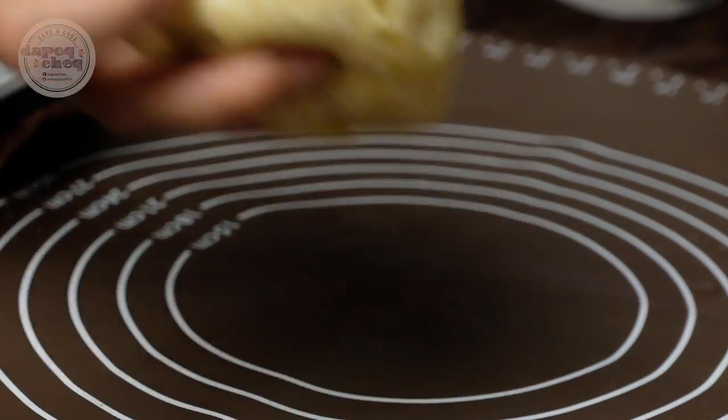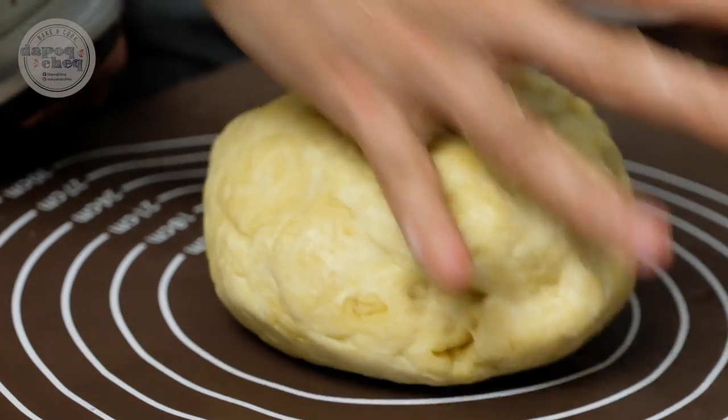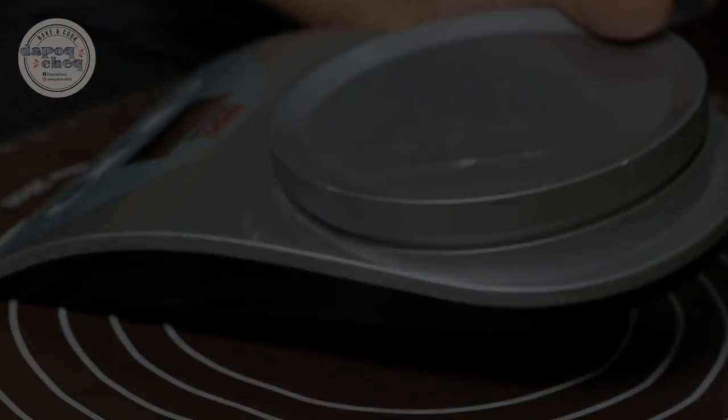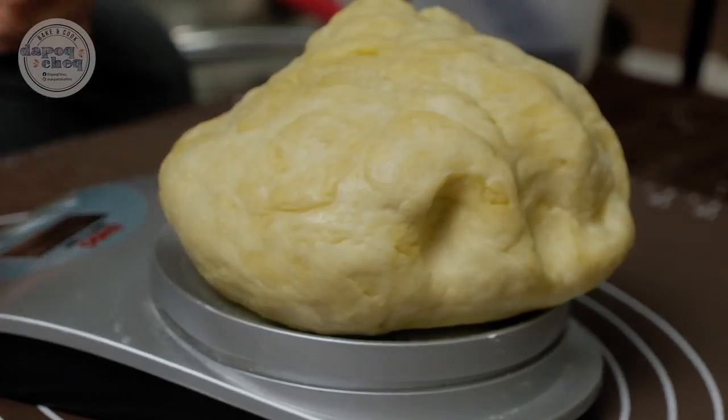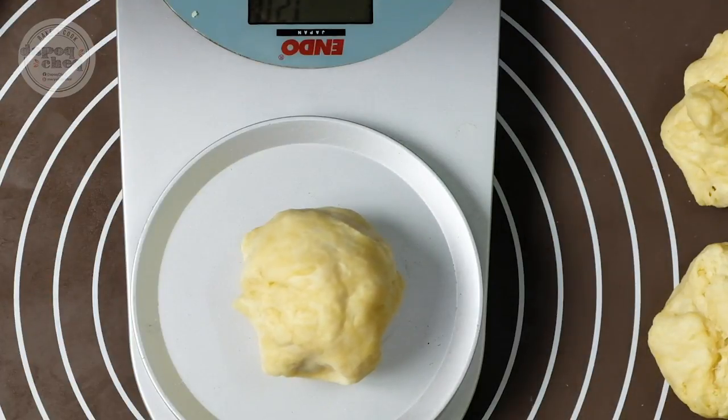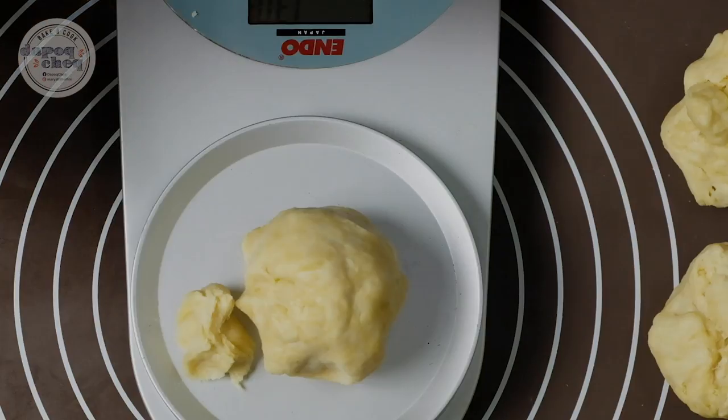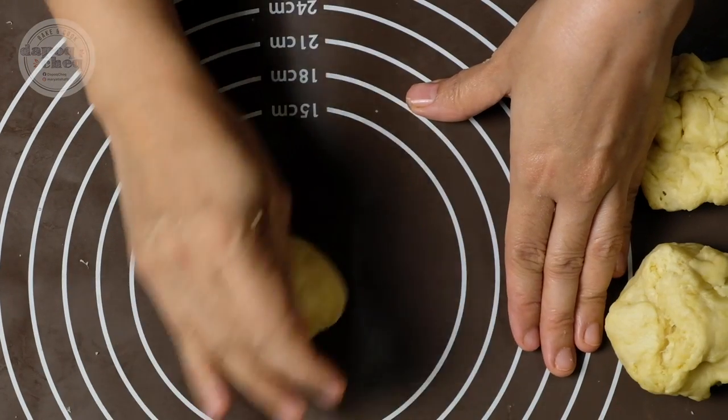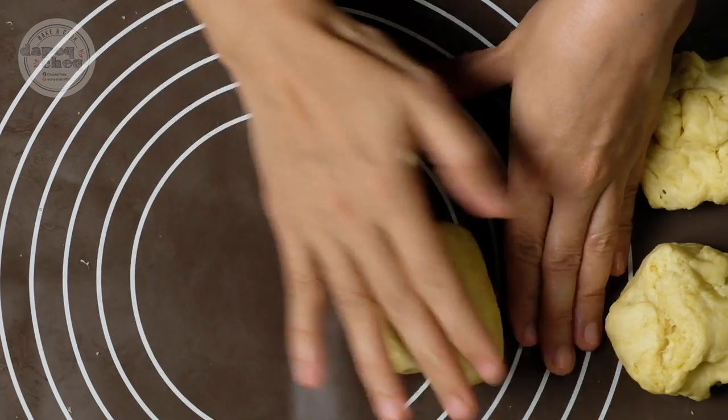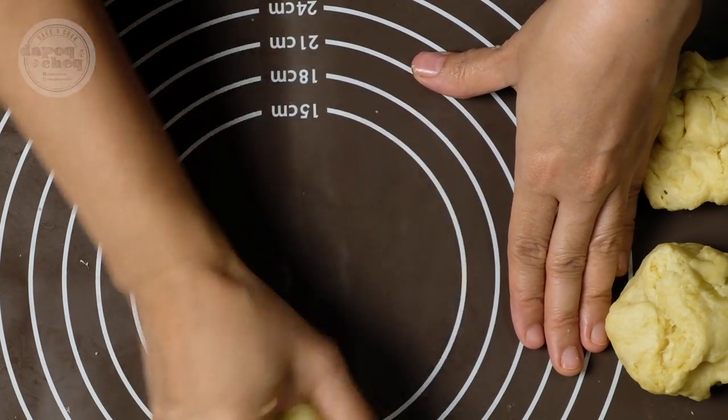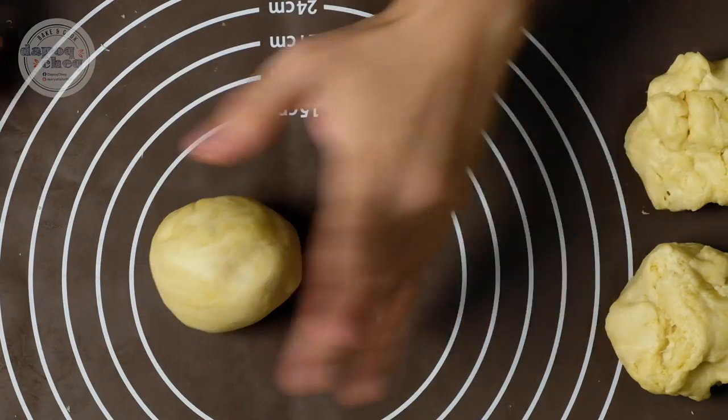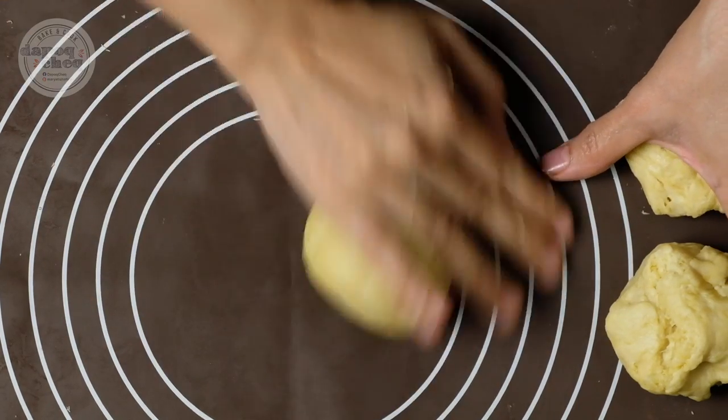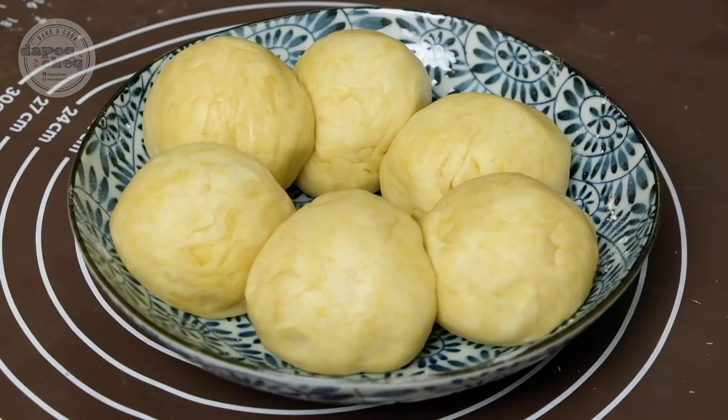Kita bahagi 6. Kalau rasa susah nak bagi direct dia kat sini, boleh timbang dulu. Kak T punya ni berat dia 791g, 132 seketul. Kalau nak precise lah kan. Nak agak-agak je boleh je. Yang ni kita buat bulat-bulat. Lepas later kita nak letak yang dough minyak tu dalam dough biasa. Karipap ni dia renyah lah sikit, tapi dia worth it lah. Try sekali-sekala. Ni dough biasa kita dah siap.